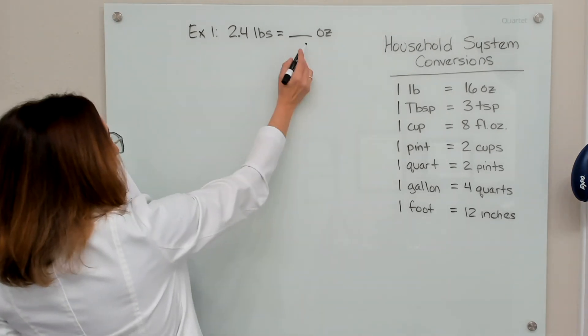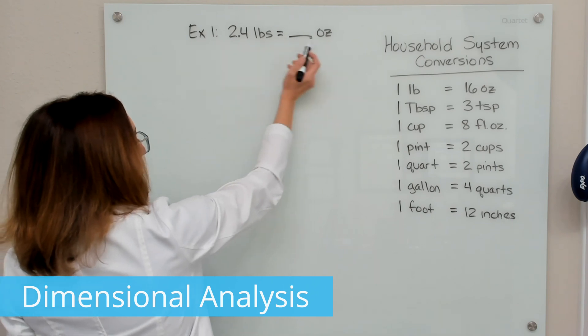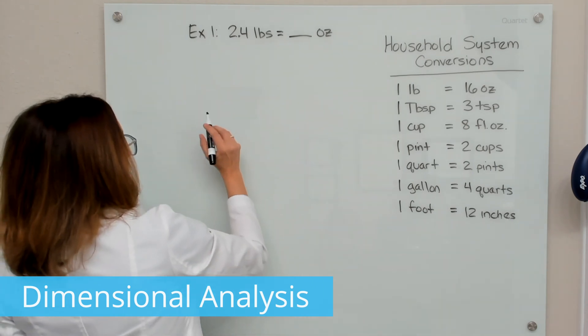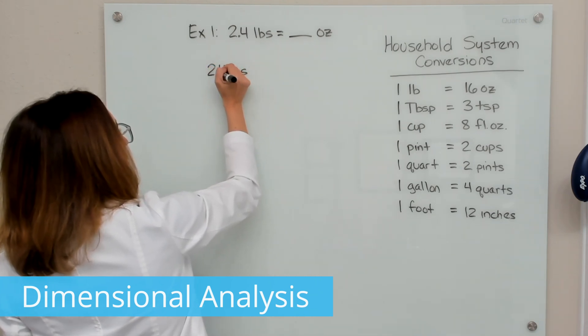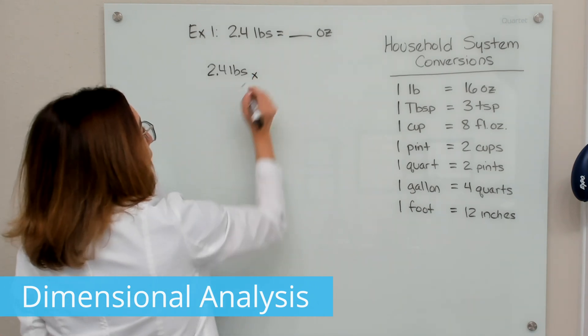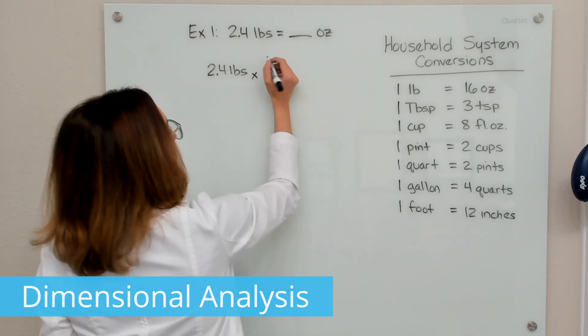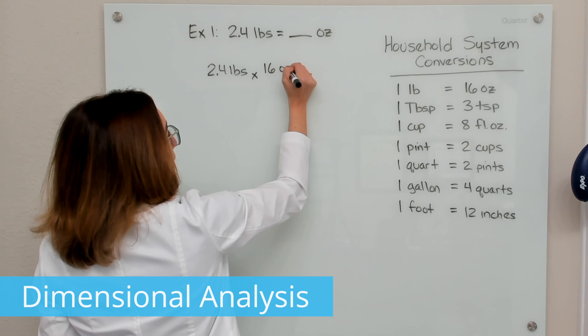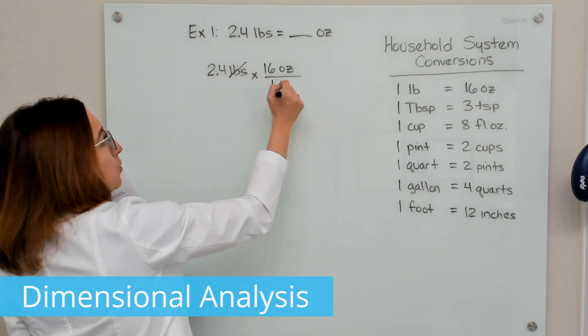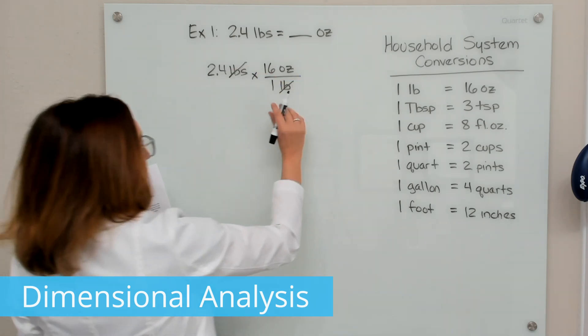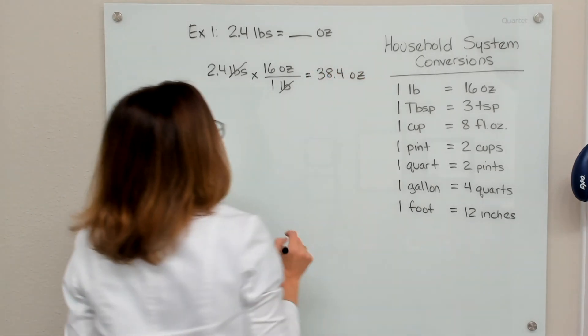Okay, so let's first solve this first example problem, which asks us to convert 2.4 pounds into ounces using dimensional analysis. So 2.4 pounds, we write down the current units of measure, so that's 2.4 pounds. And then we're going to multiply it times the appropriate conversion factor, which is this first one here. So we're going to set it up so that 16 ounces is on top and 1 pound is on bottom. So that way my pounds will cross off and I'll be left with ounces. So if you multiply this out, you end up with 38.4 ounces.